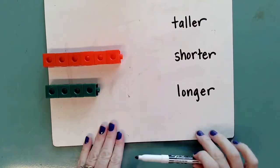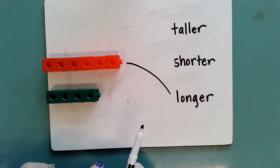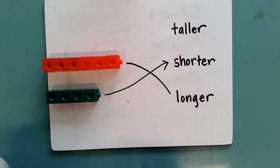So when I do that, I know that my orange tower here is longer than the green tower, and my green tower is shorter than my orange tower.